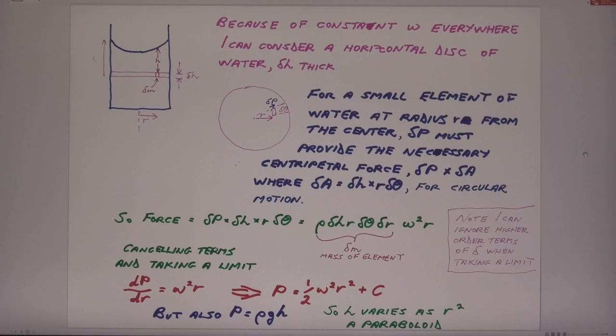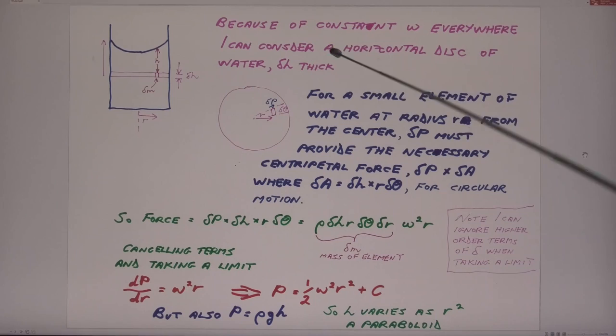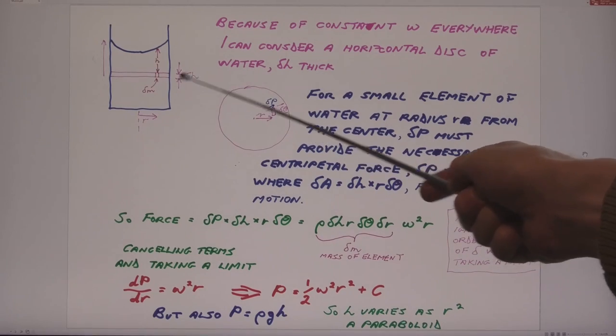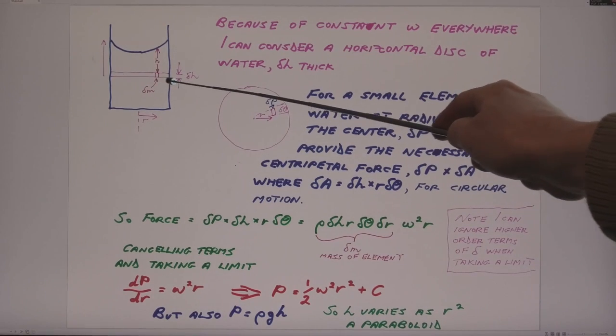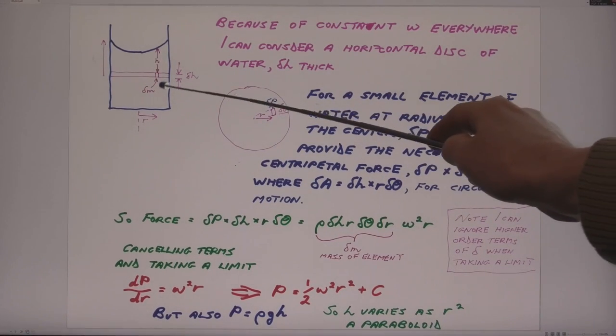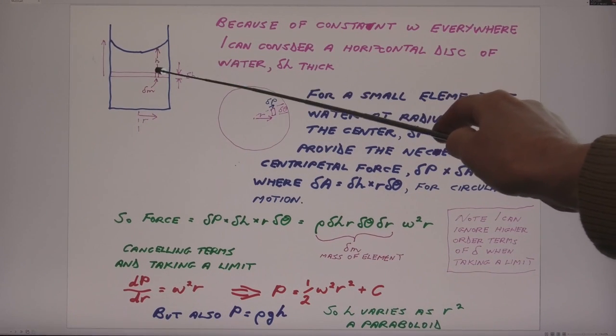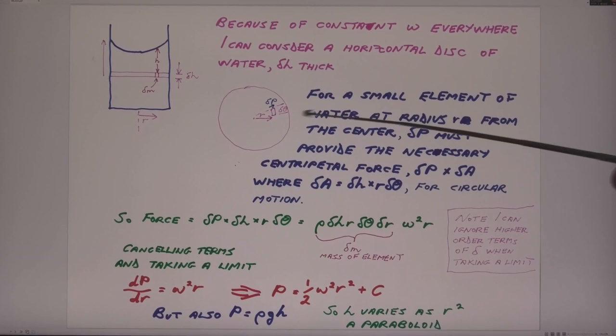And now because I consider a constant omega everywhere, I can now almost consider this as a solid rotating. It's not quite a solid because we do have pressure to consider, but essentially the water is not changing in shape, which is crucial. So I can now consider a horizontal disk of water, and here it is in plan view, and within that I consider at a radius r a small mass delta m with a height of water h above it and a thickness of the disk delta h. So I consider this small element which must be rotating, and the whole disk is rotating effectively like a solid disk.